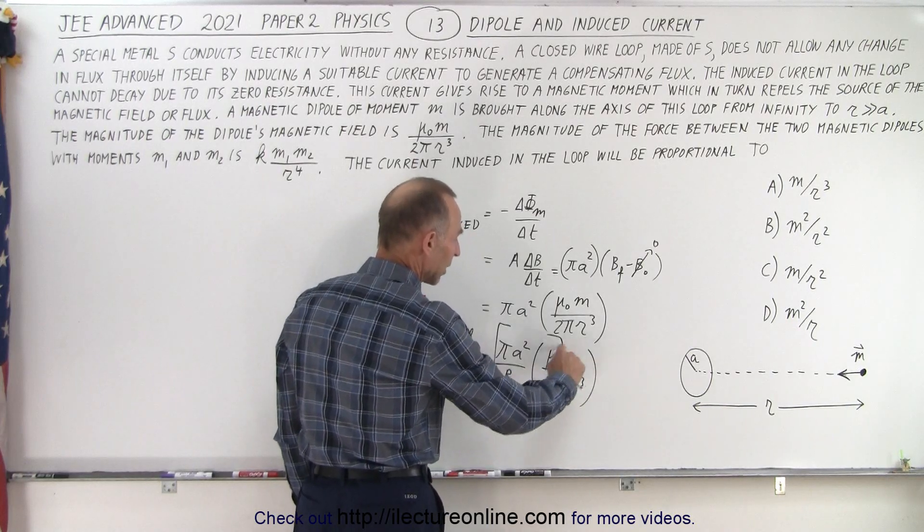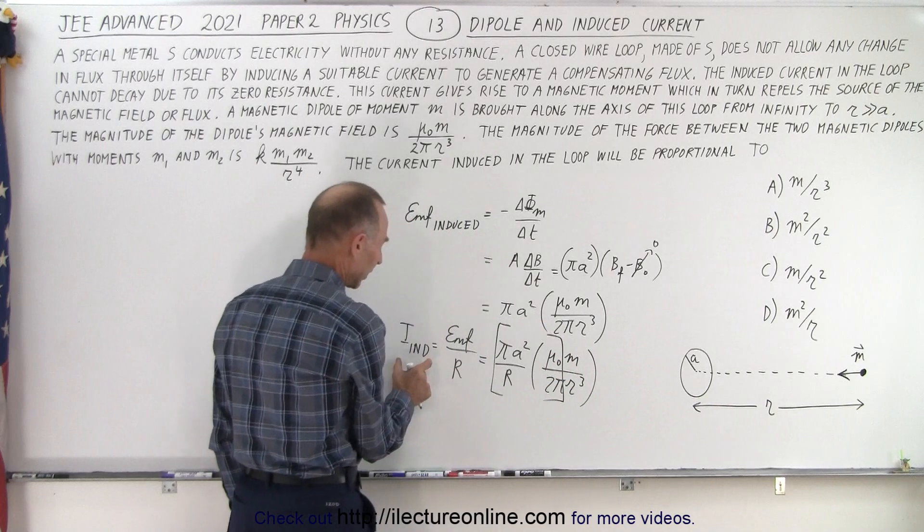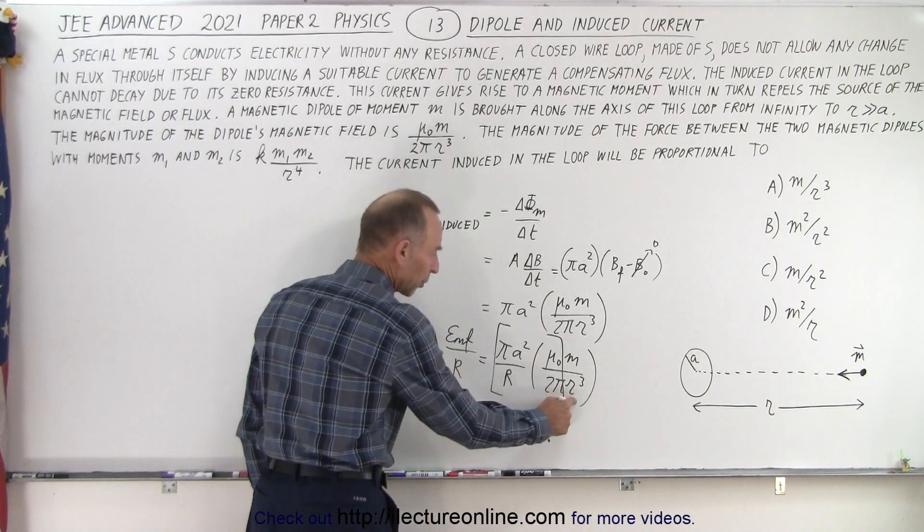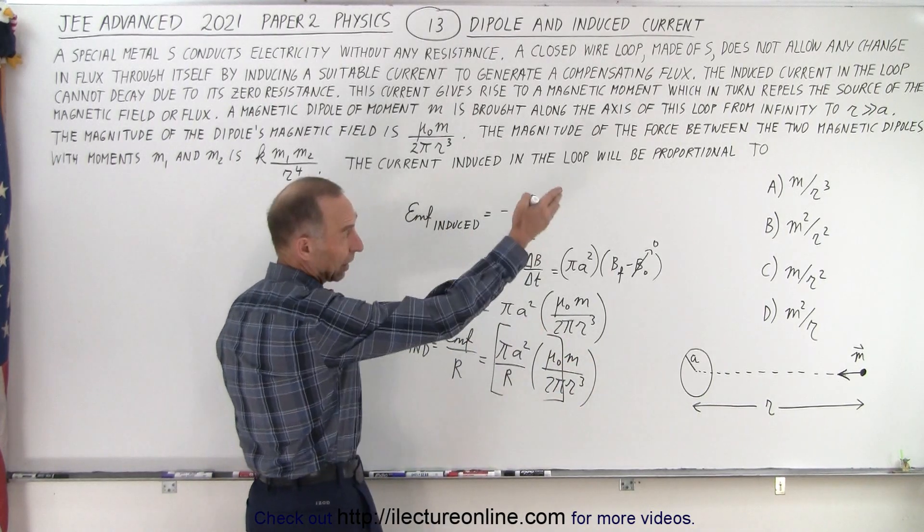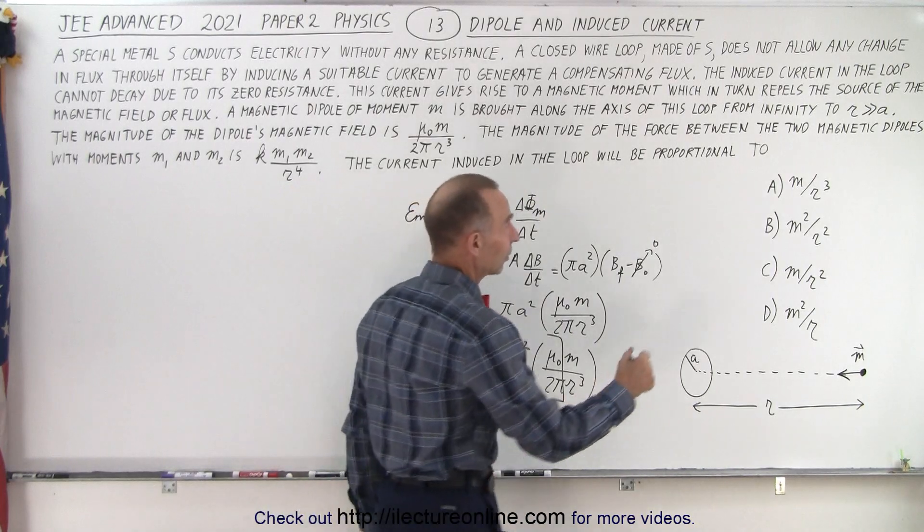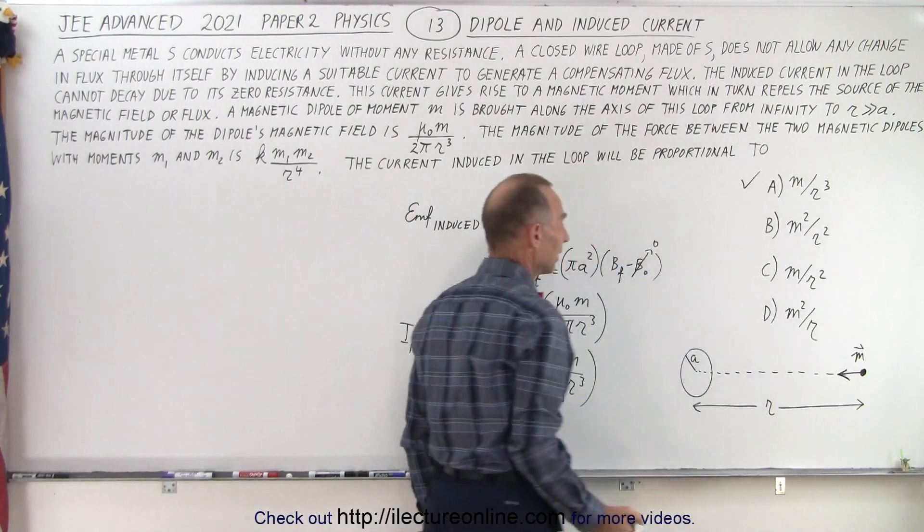So you can see that the only thing that matters, everything else is a constant, so we can then say that I induced should be proportional to m over r³. And when we look at the possible answers, you can say that A is the only one that has that.